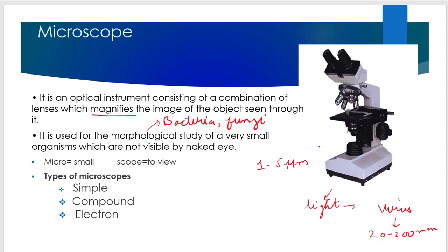This microscope is suitable for the study of bacteria and fungi. 'Micro' means small and 'scope' means to view, so the microscope provides us an opportunity to view microscopic things beyond the limitation of the human eye. Depending on its type, we can classify microscopes as: simple microscope, compound microscope, and electron microscope. A simple microscope just magnifies. A compound microscope has several lenses like 10x, 40x, and 100x, and we can visualize things at different magnifying powers.